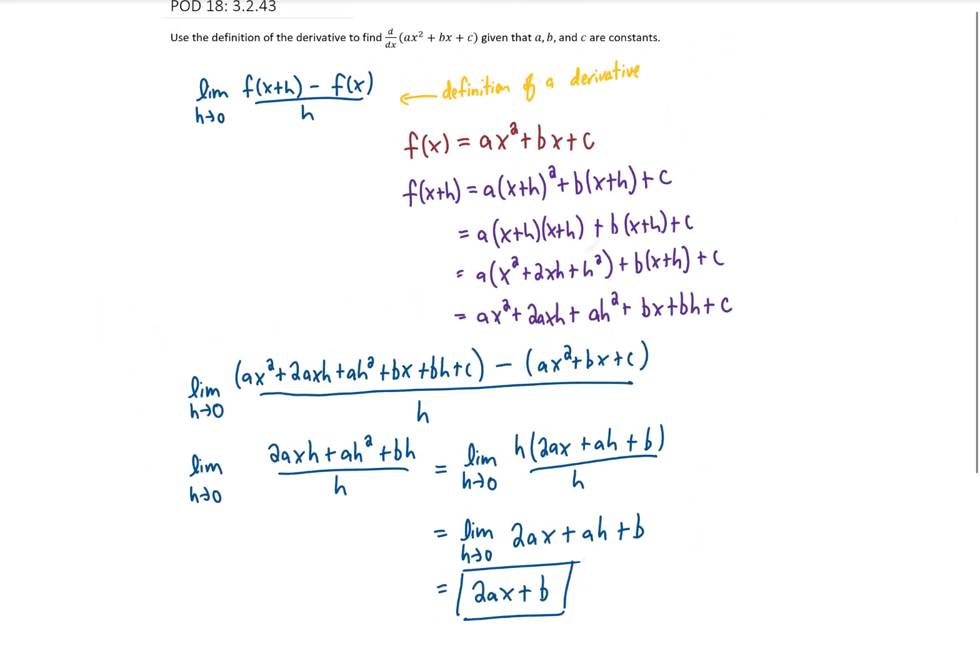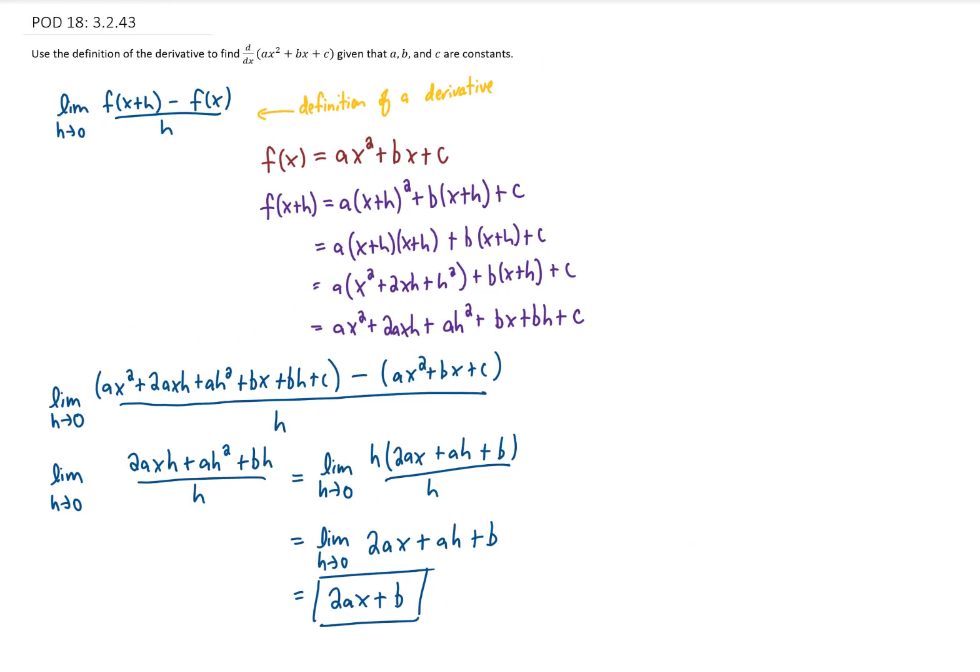And I will zoom out on this so you can see all of our work. We found that the derivative of this general quadratic expression up here equals 2ax plus b. Before long, you're going to have a much faster way to do this. But for now, we're just using this definition of a derivative to find all of our derivatives. But don't worry, there will be shortcuts soon enough. But that's all I have for you for today. I'll see you tomorrow for the next calculus problem of the day.